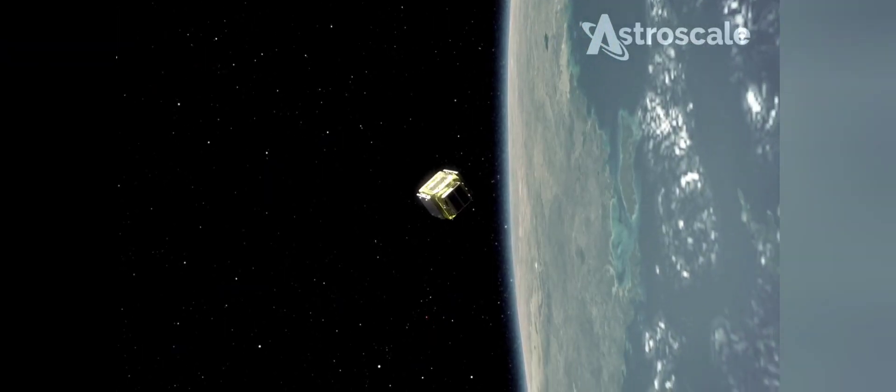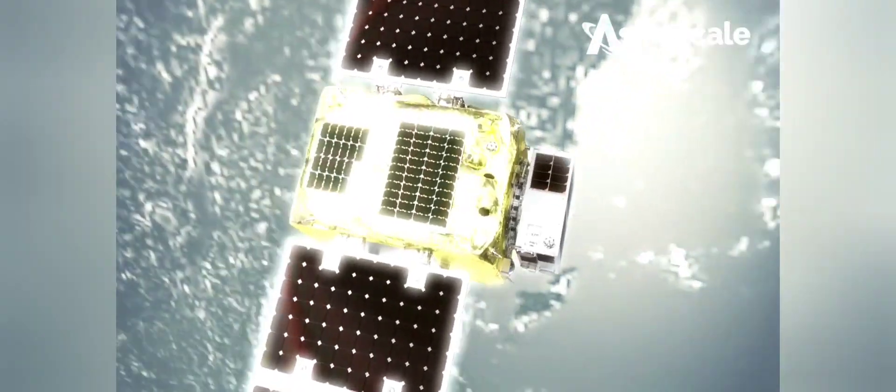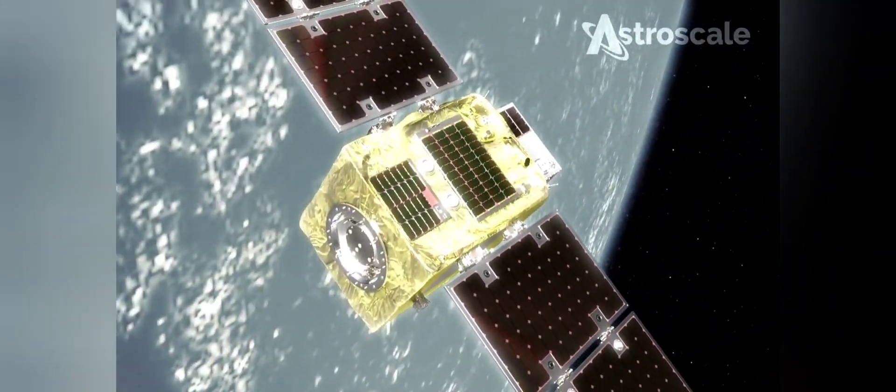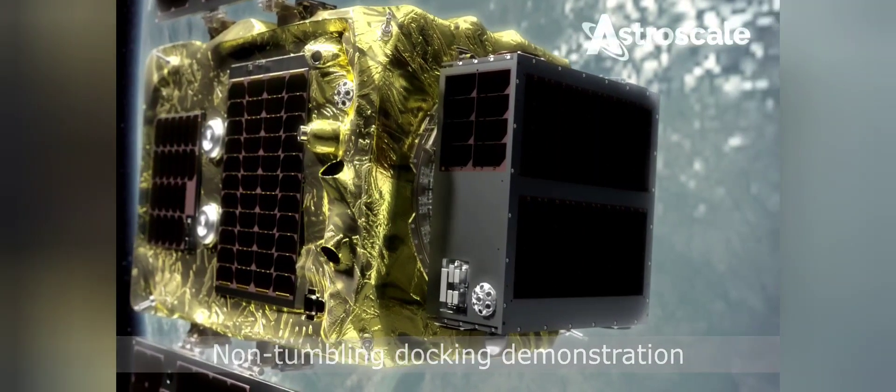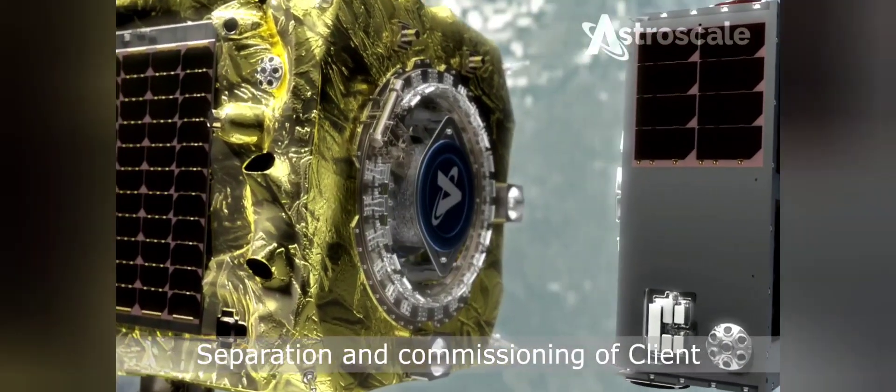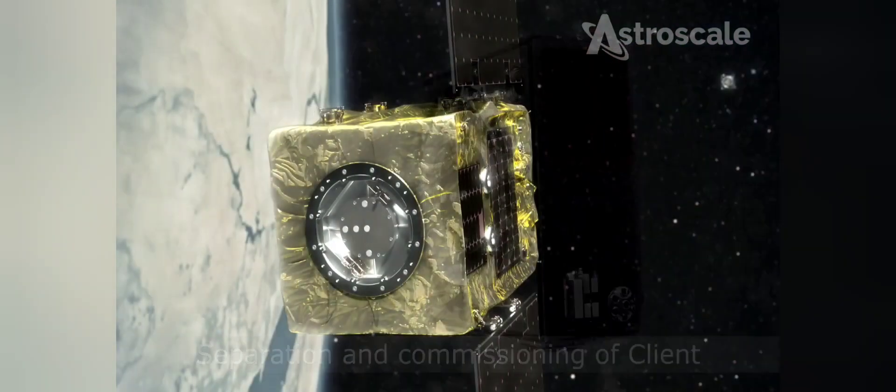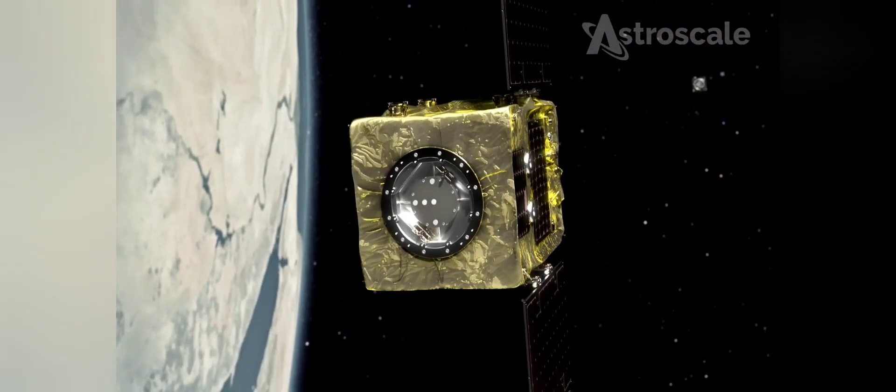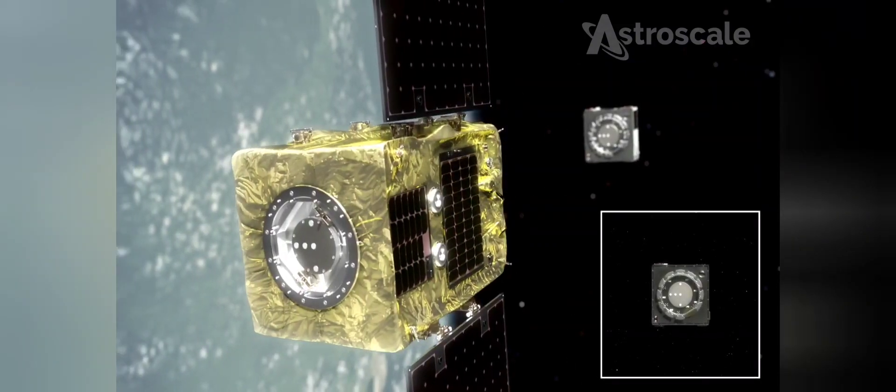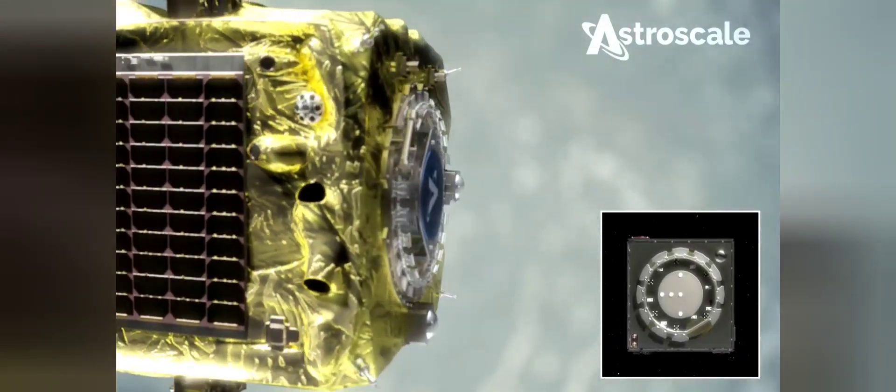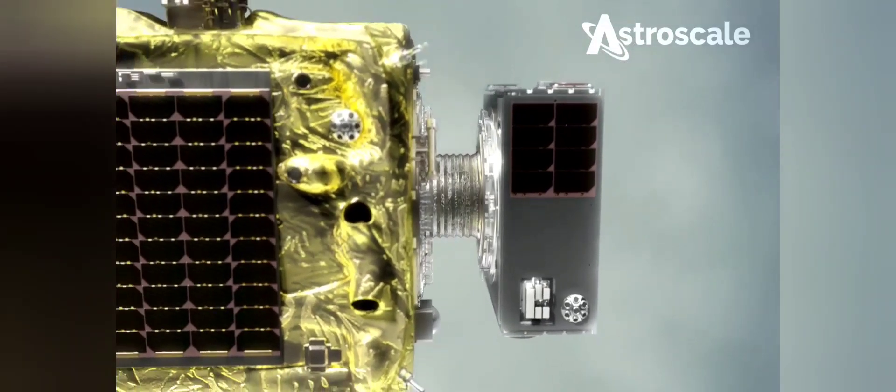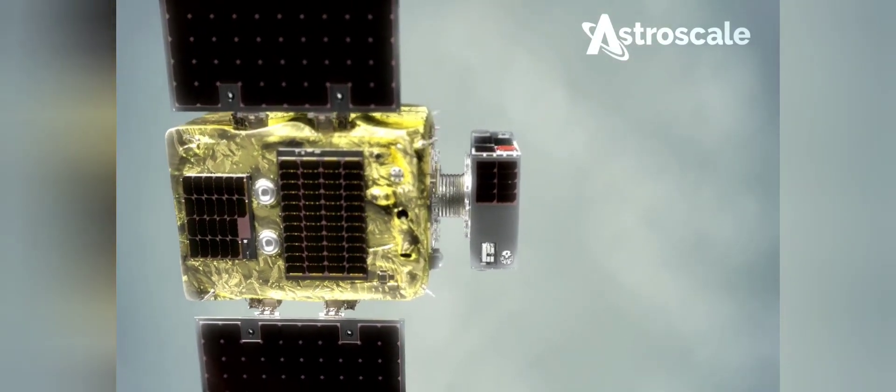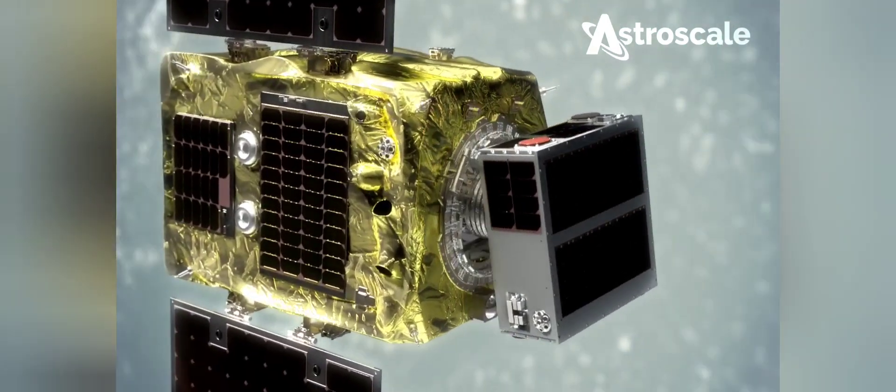Now some of you may be sick of hearing about Astroscale, but I believe that this is the company that is the most likely to be able to take care of our problems in low Earth orbit as quickly as possible, simply because it already has a functioning prototype in orbit that has recaptured a client satellite. It works. It's functional and ready for mass production. This satellite is 660 millimeters by 640 millimeters by 1.1 meters as far as its dimensions are concerned.